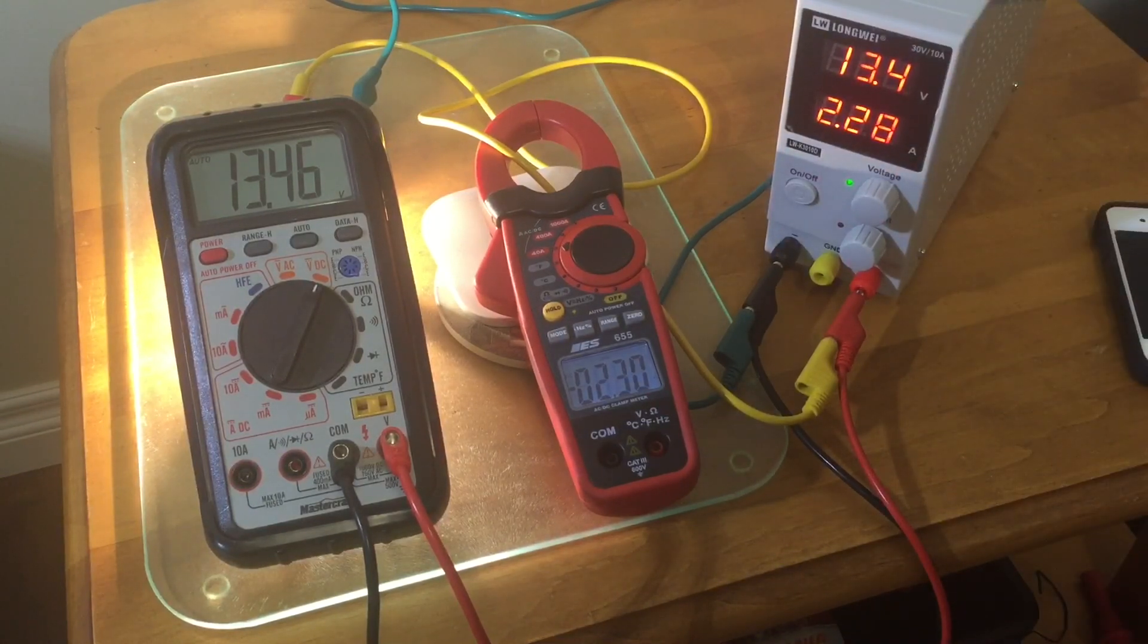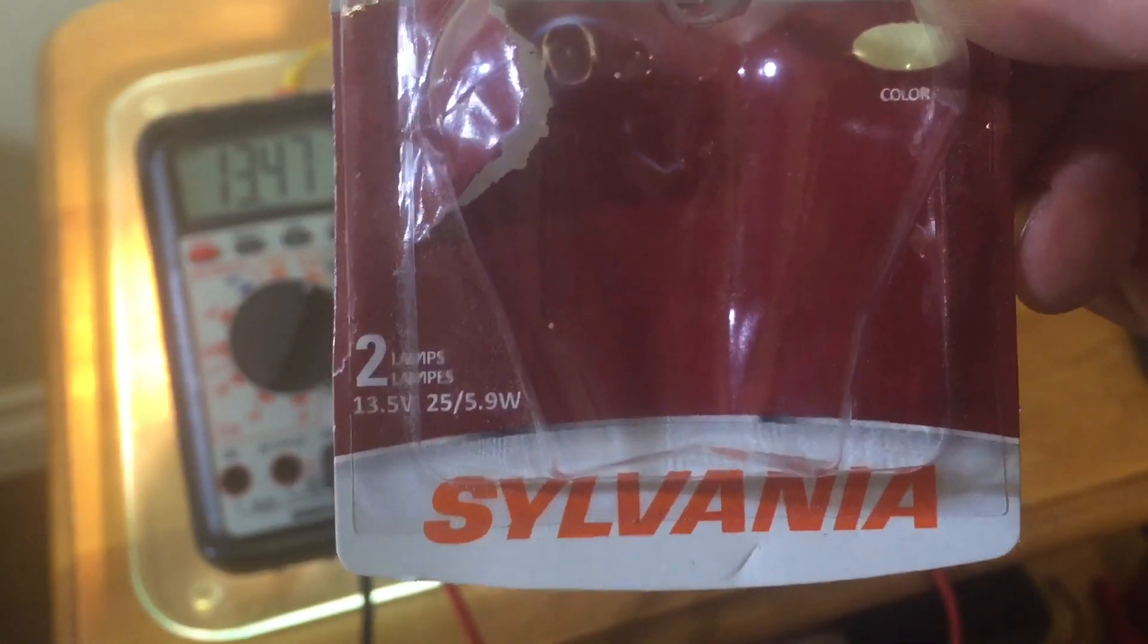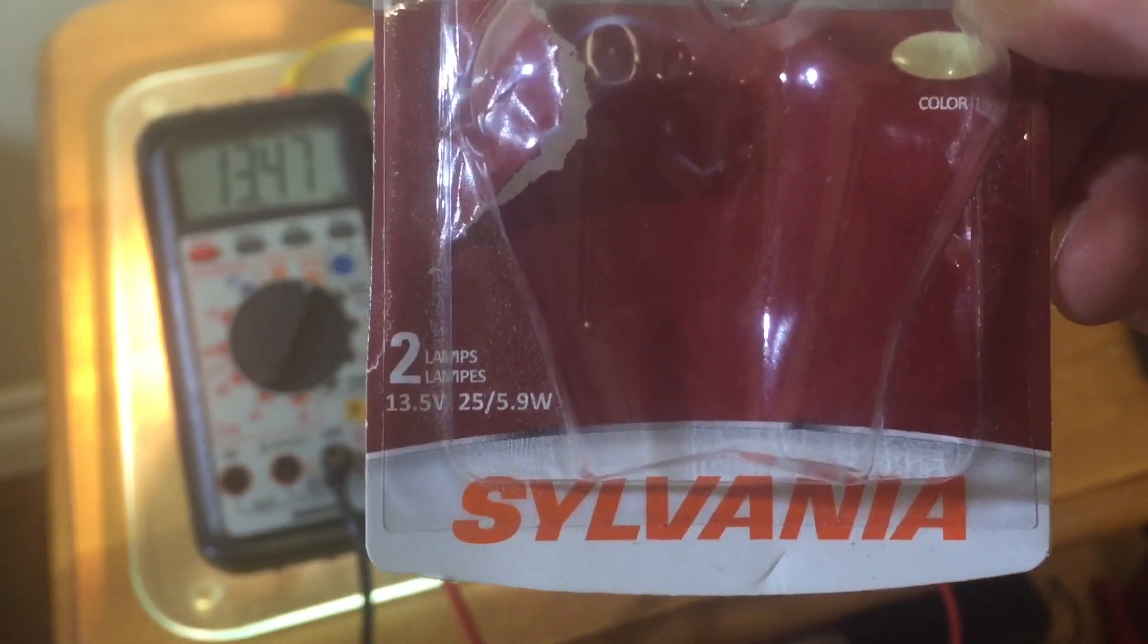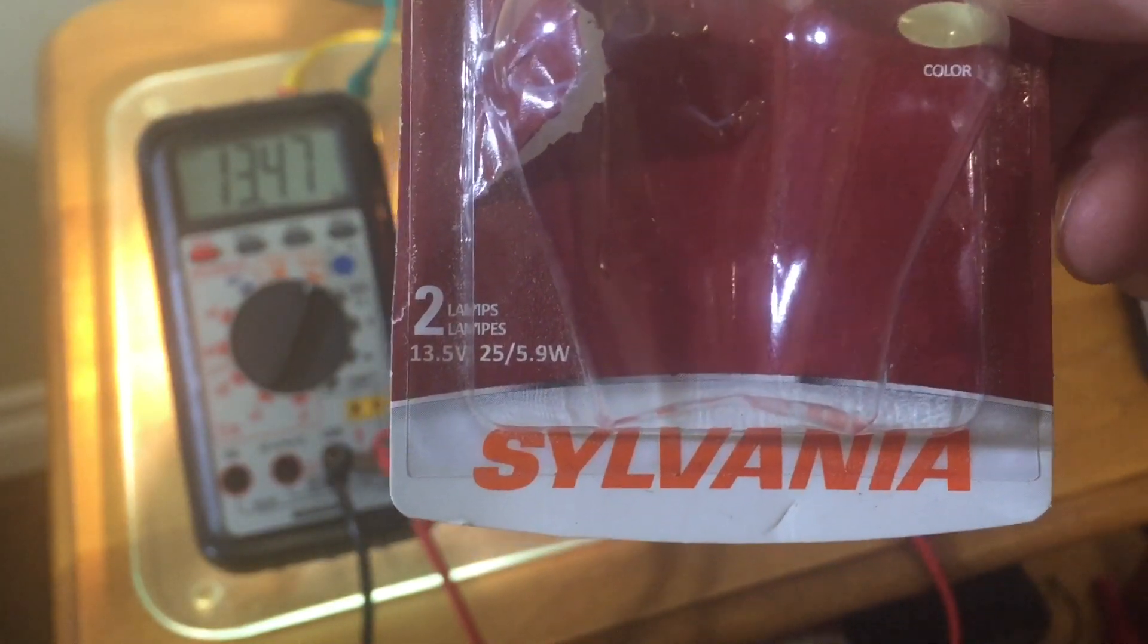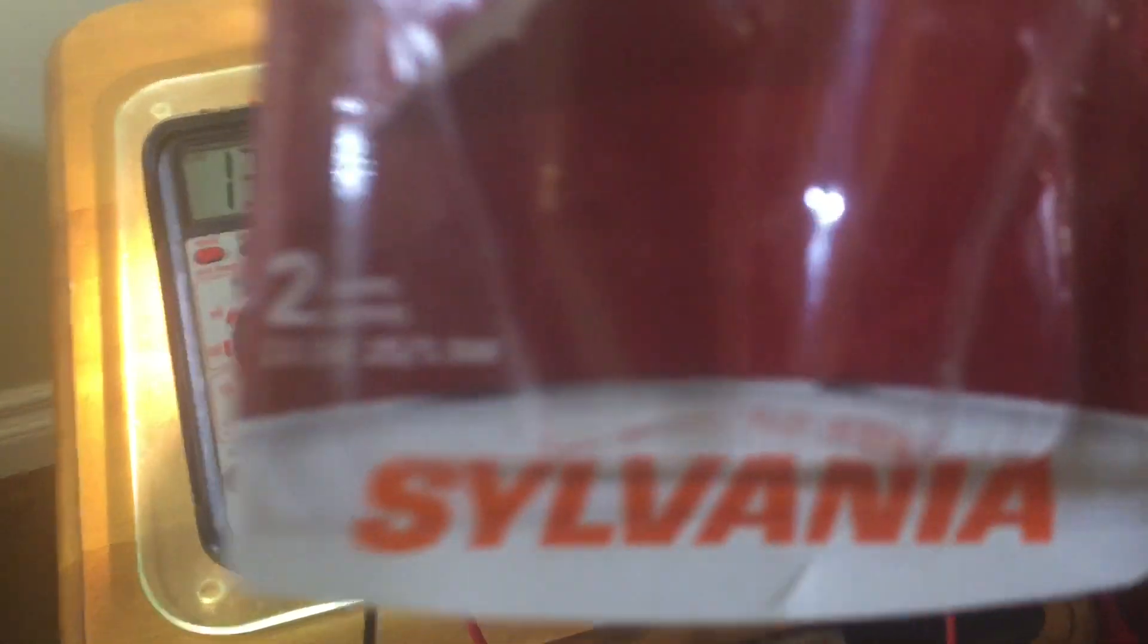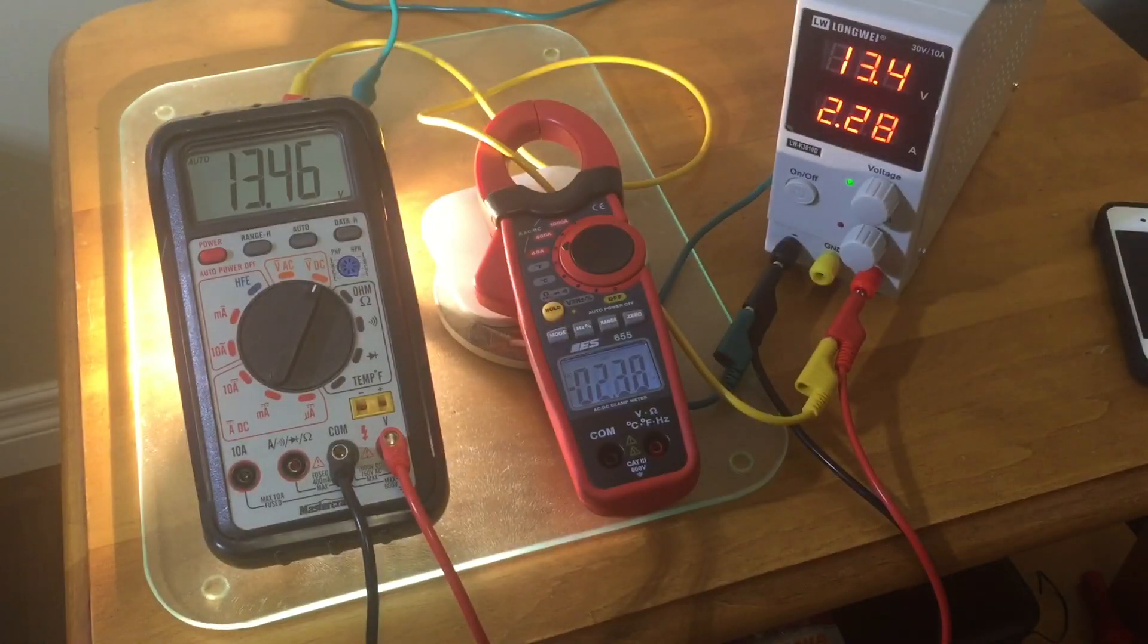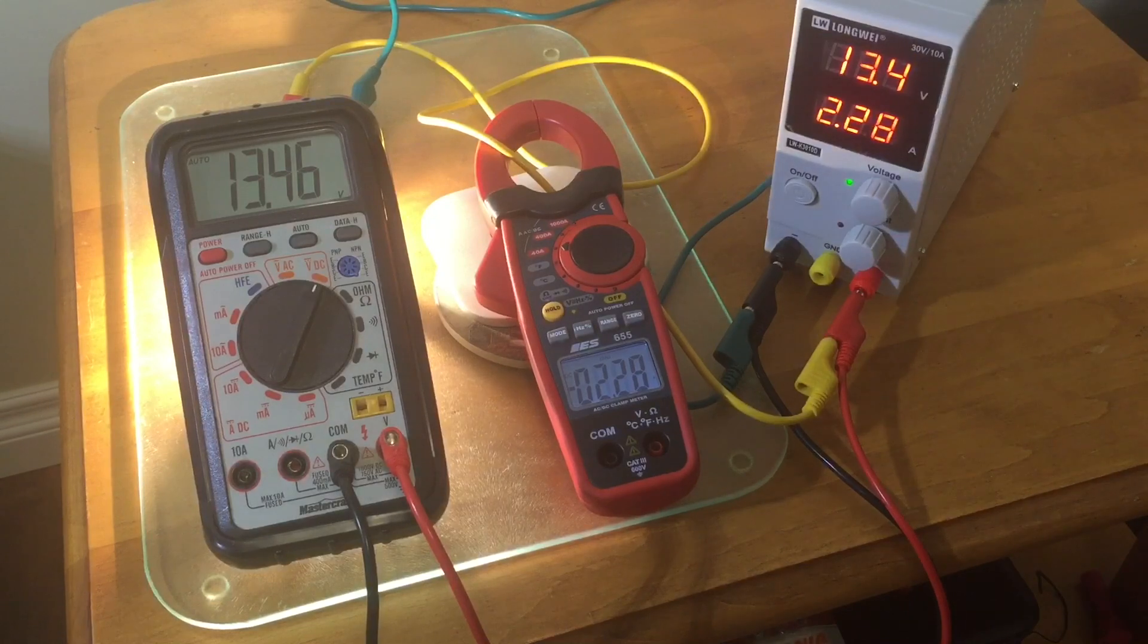Here are the specs on the lamp—you can see them there. At 13.5 volts, there's a 25-watt filament and a 5.9-watt filament, for a total of 30.9 watts. Let's quickly do the math: you can see that the current is actually extremely accurate as well, at least at this end of the range.